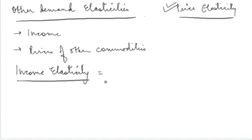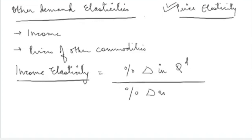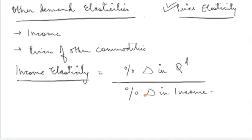The concept of elasticity stays the same — we are talking about the change in the quantity demanded. Income elasticity of demand is the percentage change in quantity demanded divided by the percentage change in income. If you recall the formula of price elasticity of demand, it is percentage change in quantity demanded divided by percentage change in price. The only thing changing here is the denominator.